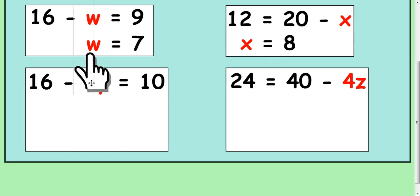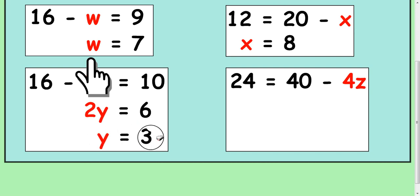More complicated ones. Cover up the 2y. So, 16 take away what is 10. So, that's 6. So, it's 2y under the hand. It equals 6. And finish it off the same way. You have to divide by 2. So, 3.